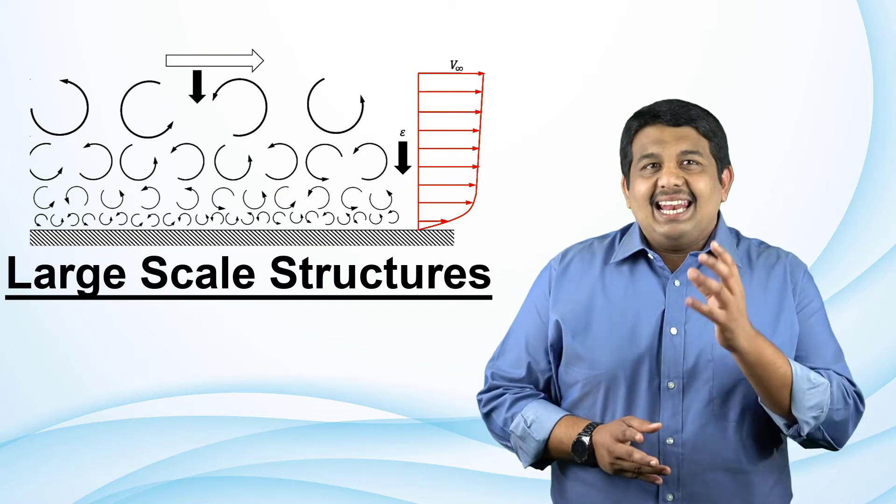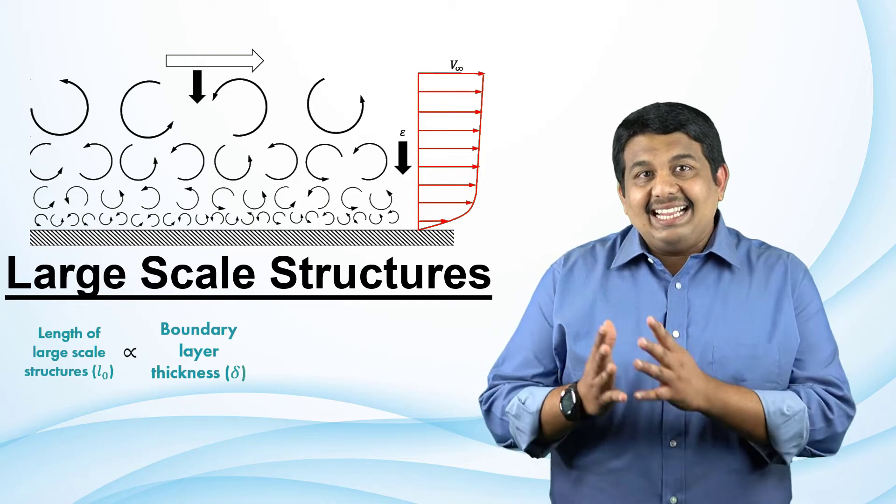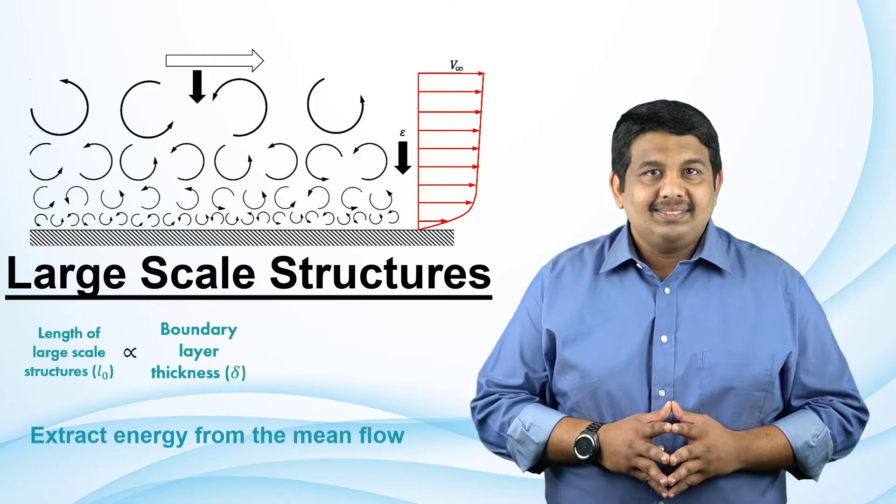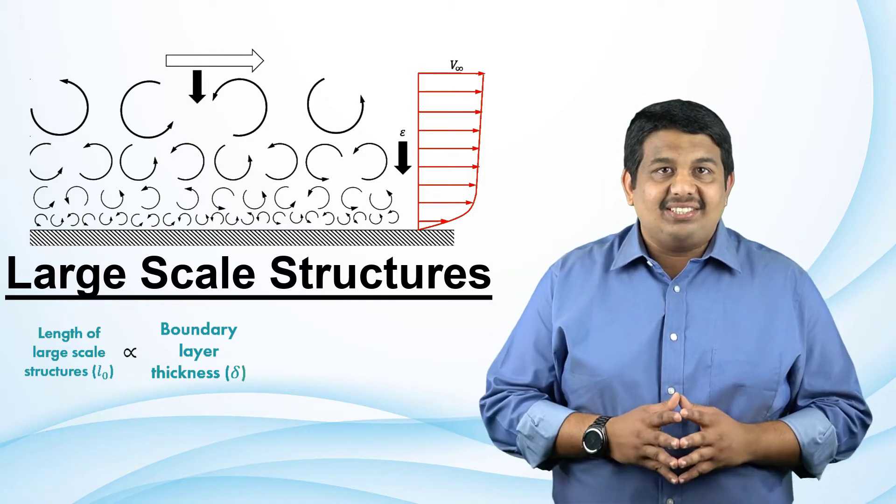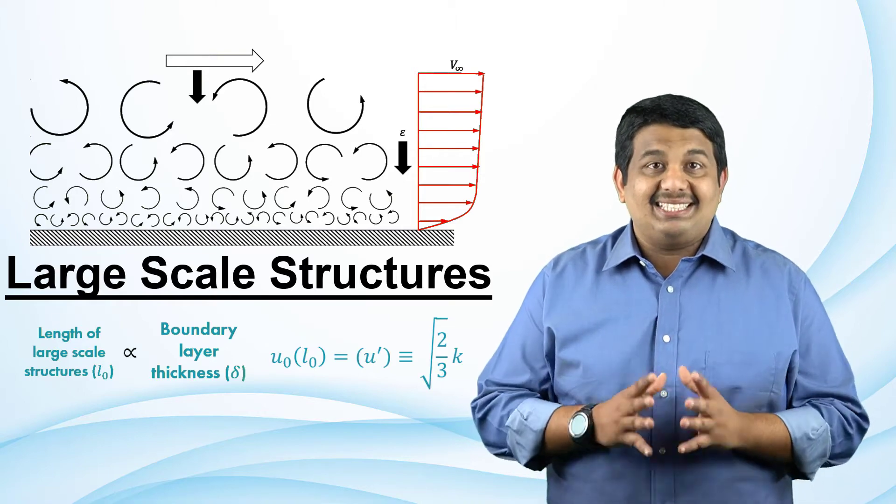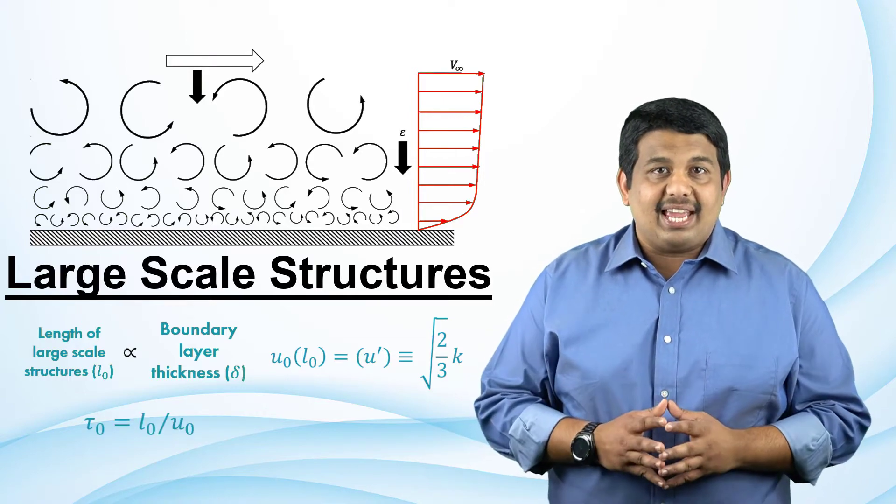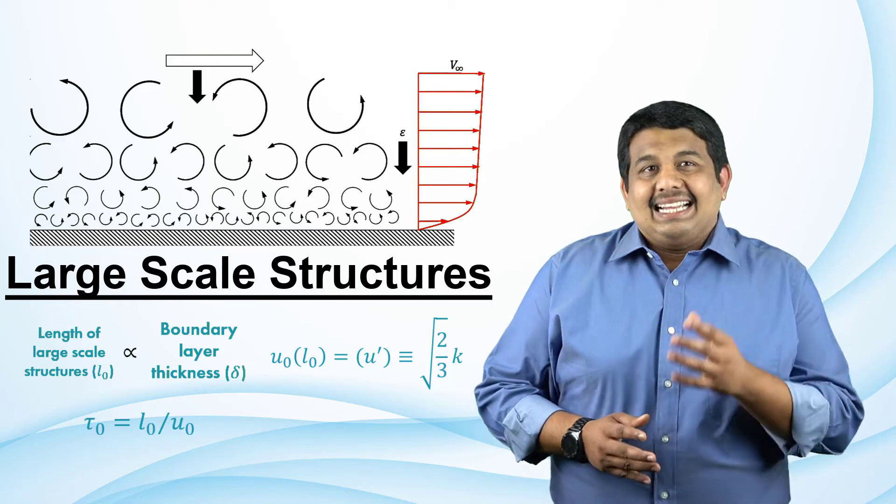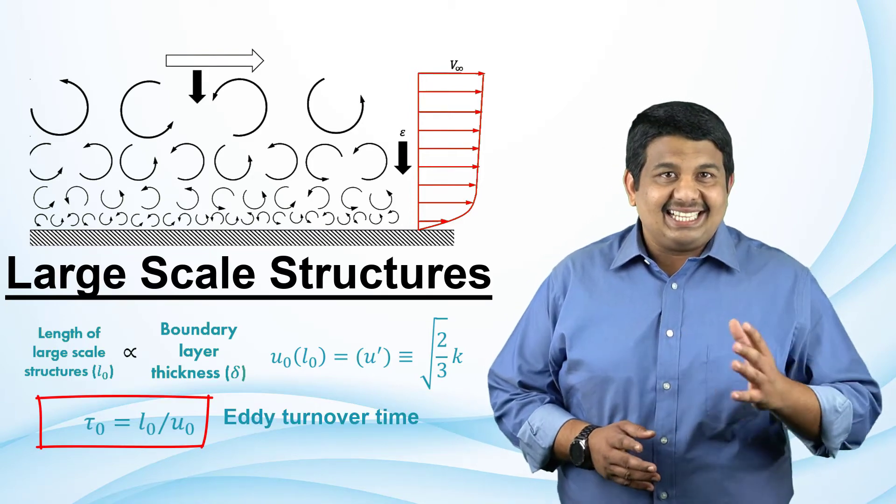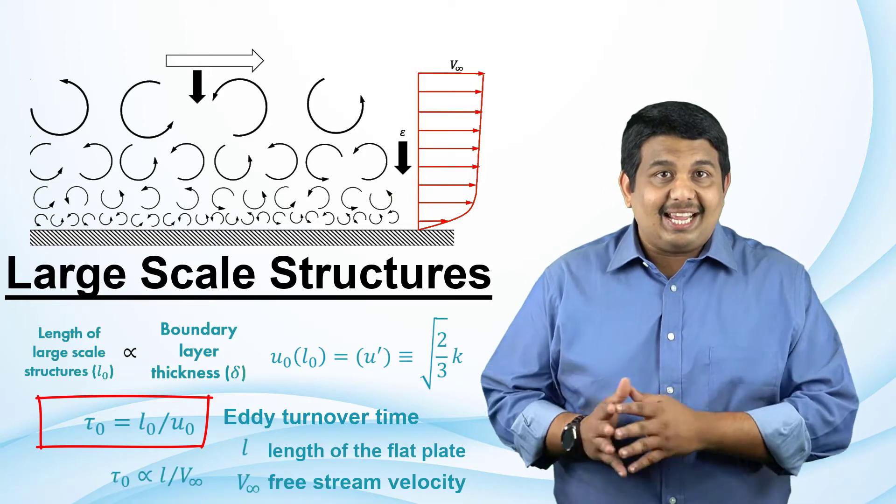Let us now take the example of turbulent flow over a flat plate to understand the dynamics of these large and small scale structures. For such a problem, the large scales are of the order of the boundary layer thickness. These are responsible for extracting the energy from the mean flow in order to sustain the turbulent characteristic of the flow. The characteristic velocity of these large scale structures is comparable to the mean flow velocity and is of the order of the root mean squared of the turbulence intensity. From these, it is easy to obtain the characteristic time scale of the eddies as shown here.